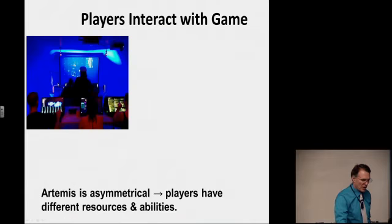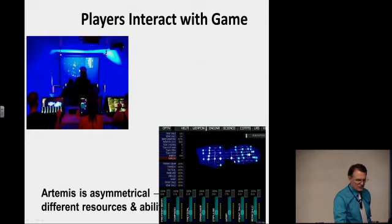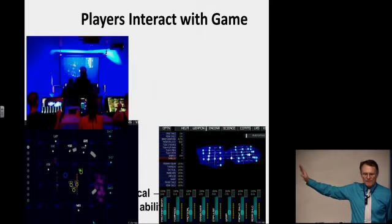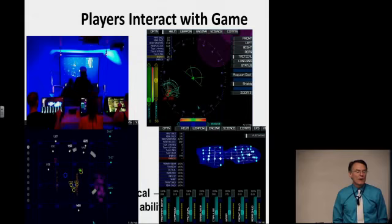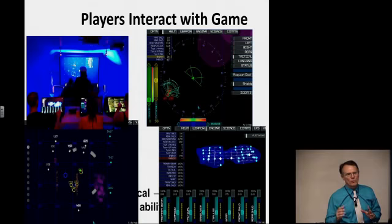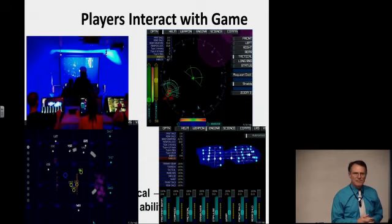Artemis is asymmetrical — all players have different resources and abilities when cooperating. For example, the chief engineer deploys power, coolant, and damage control parties to fix systems. The science officer scans the sector to determine where enemies are and what's dangerous. The helm officer steers the ship, activates warp and impulse drive, and controls speed. There are also the captain, communications officer, and weapons officer. They all have to work together to achieve victory.